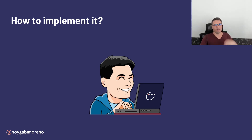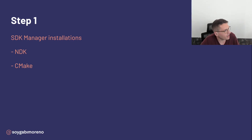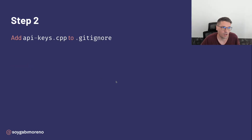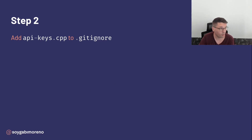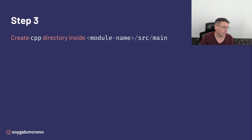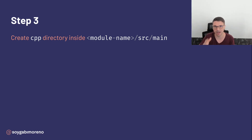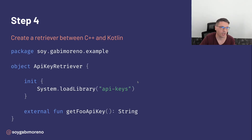We can do this in eight steps. The first step is to ensure that we have the NDK and CMake installed. The second step is to add the native file we are going to use to our .gitignore.